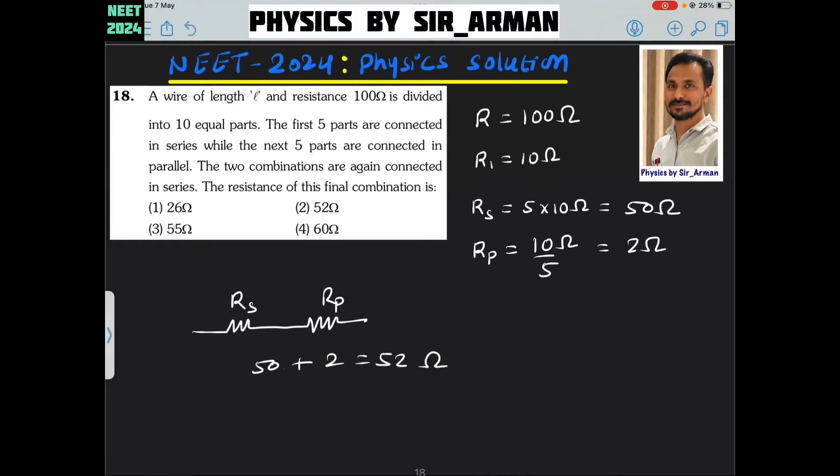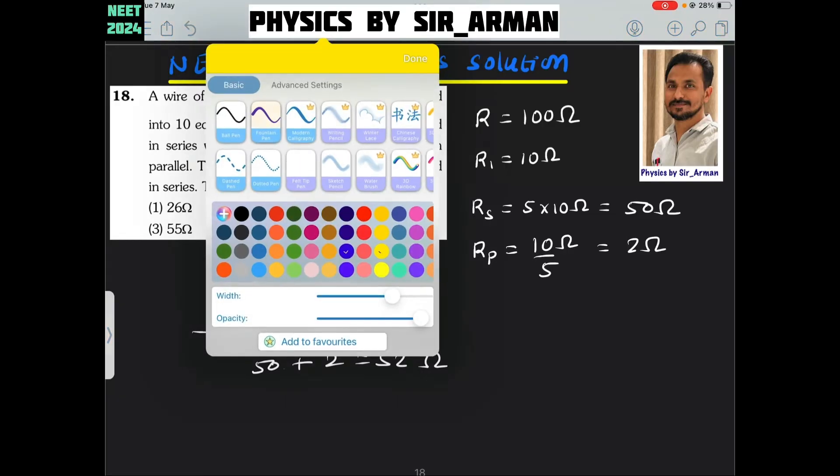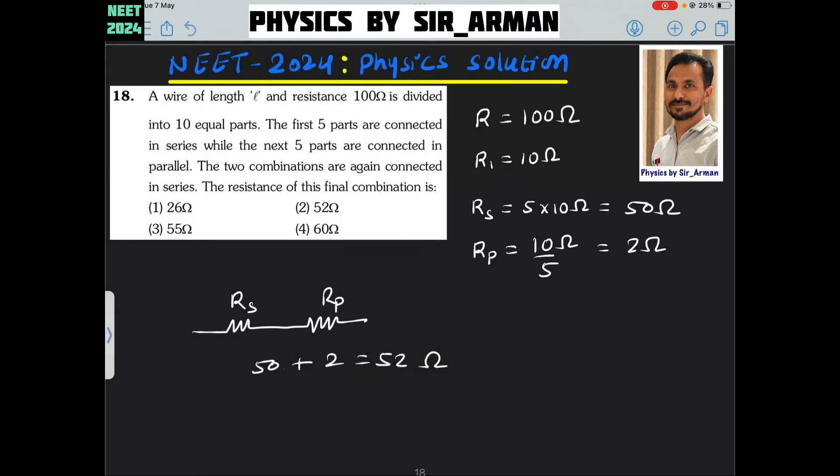Question number 18. A wire of length L and resistance 100 ohm is divided into 10 equal parts.